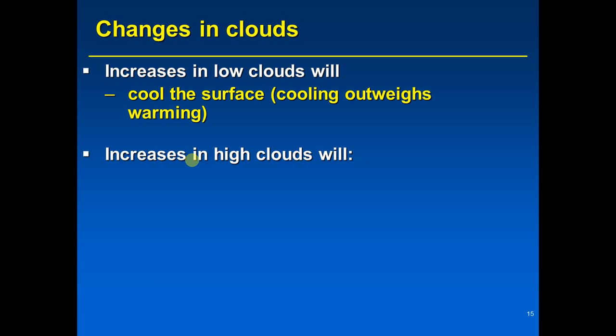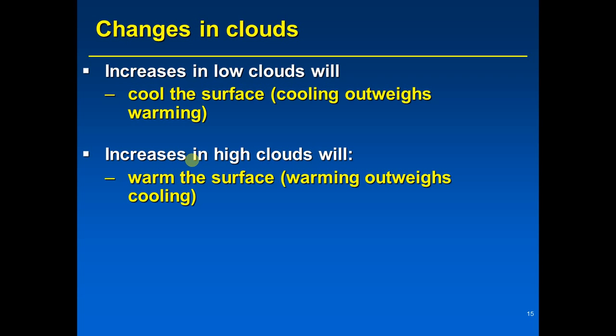High clouds are thin and are therefore fair or poor reflectors of solar radiation — most solar radiation passes through them. However, they are good or excellent absorbers and emitters of infrared radiation. Because they are better at contributing to the greenhouse effect than the albedo effect, their warming outweighs their cooling. An increase in high clouds would warm Earth's surface.